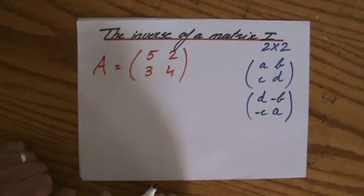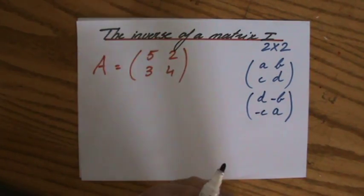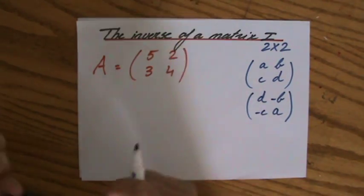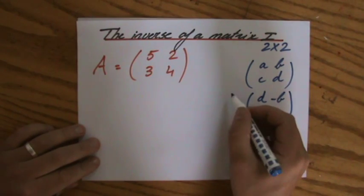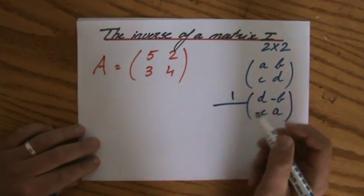But that matrix, then, you have to multiply by a particular scalar, by a particular number. And that number is going to be a fraction because it's going to be 1 over the determinant.